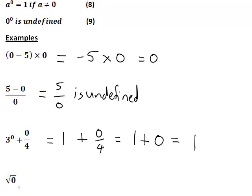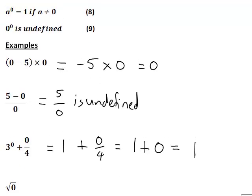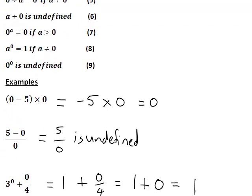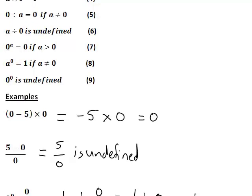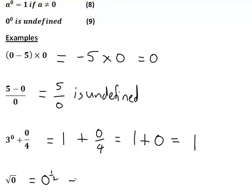For the next example, let's consider the square root of 0. We can write the square root as a power: the square root of 0 is the same as 0 to the power of a half, which is 0 to the power of a positive number. And 0 to the power of any positive number is just equal to 0 by rule 7 in our list. So that is equal to 0.